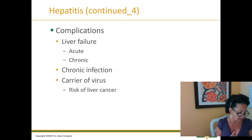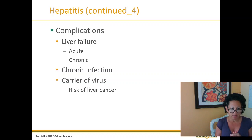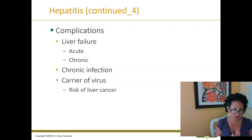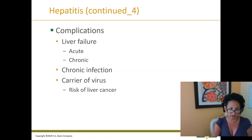People who contract hepatitis and develop acute complications are often those who are homeless or don't have the ability to recover, access all medications, or get their immune system back in order. They may also be dealing with addiction, which keeps their body immunocompromised. So we see chronic infections, and outcomes can include liver failure and death.